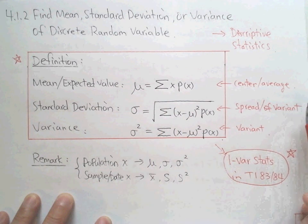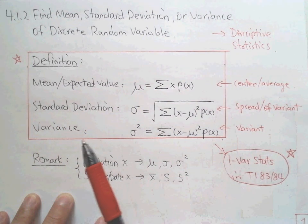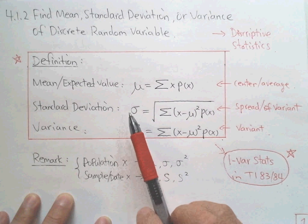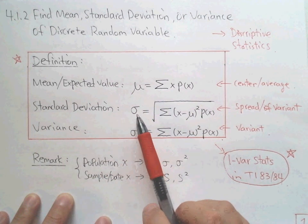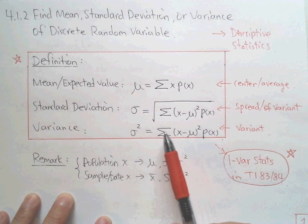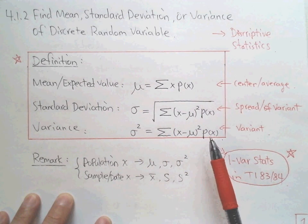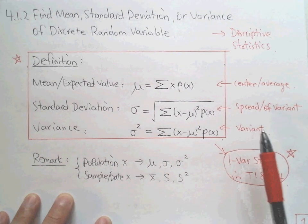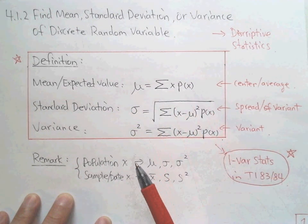The variance is the square of the standard deviation. We just cancel the square root, so the variance also tells you how spread out your random variable is. The bigger the standard deviation, the more variance you have, or the more spread out your distribution is. Don't worry about the formula — there is a lot of calculation, so we use a function in the calculator.